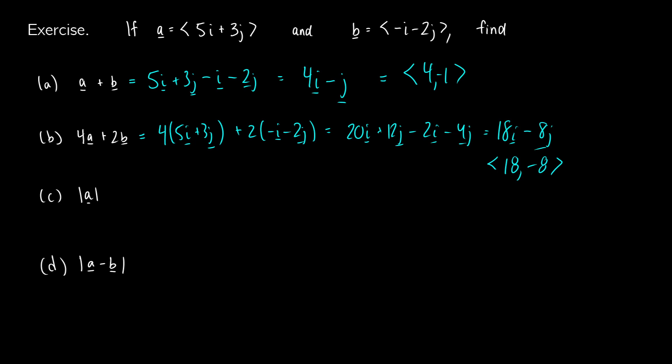I'm just realizing the first answer should be 4 and negative 1 because we're subtracting j. Now for the length of a, what we're going to do is we're going to take the square root of each component squared. So this is going to be 5 squared plus 3 squared. This is going to give us 25 plus 9, which will be the square root of 34.